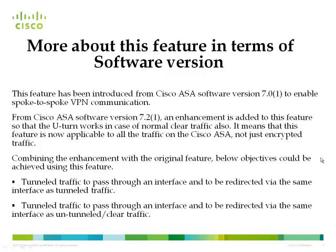This feature was initially introduced in ASA version 7.0.1. To enable spoke-to-spoke VPN communication, an enhancement was added from ASA version 7.2.1 so that the U-turn works for normal clear traffic as well. This means the feature is now applicable to all traffic on the Cisco ASA, not just encrypted traffic.